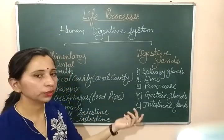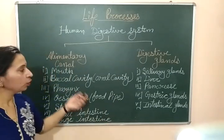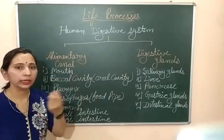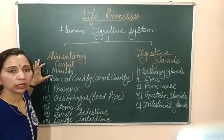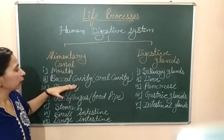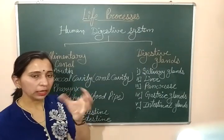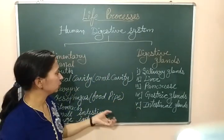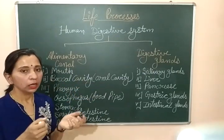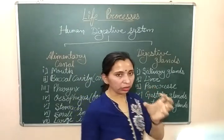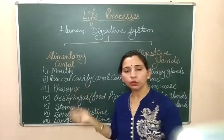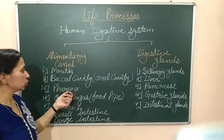The alimentary canal opens through the mouth, which is the first part where food intake occurs. Food is taken inside the body through the mouth into a cavity-like structure formed inside our mouth by the gums, which is called the oral cavity.